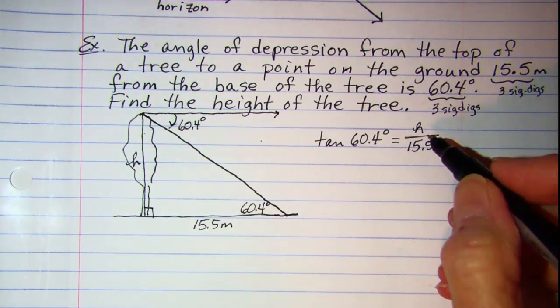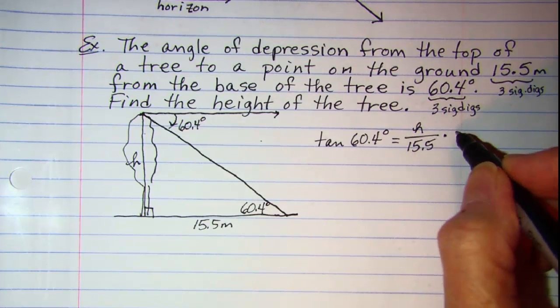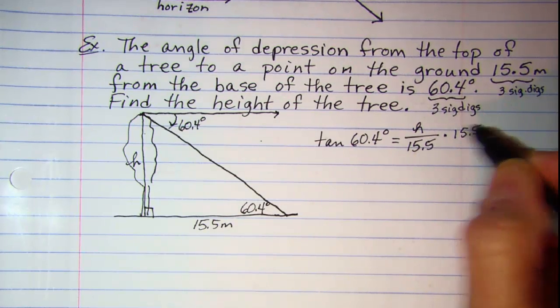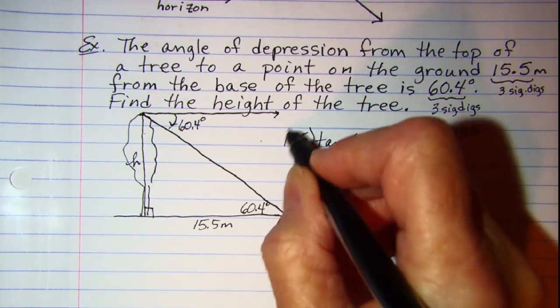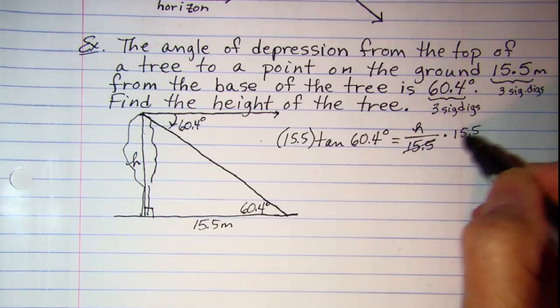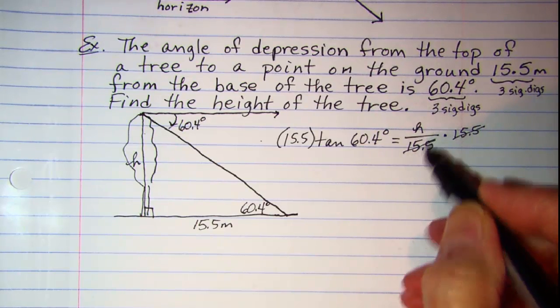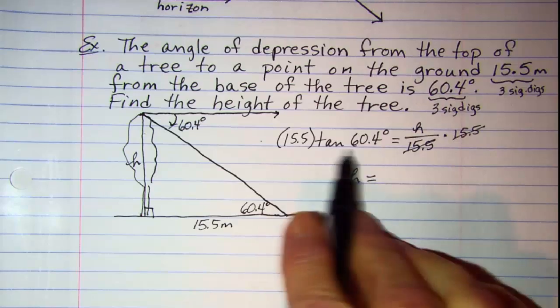Now to get H by itself, multiply both sides by 15.5. These will cancel and I'll have H is equal to this product.